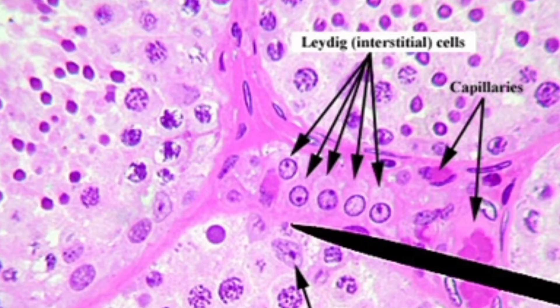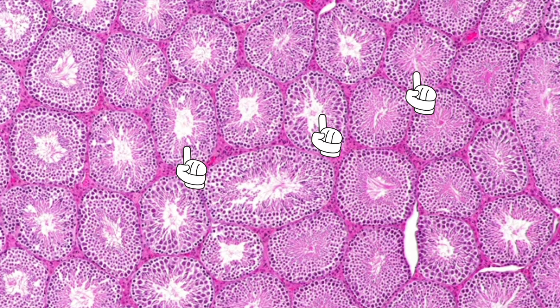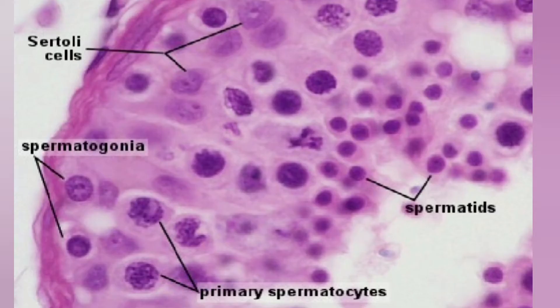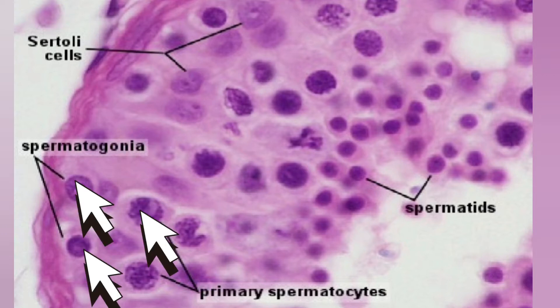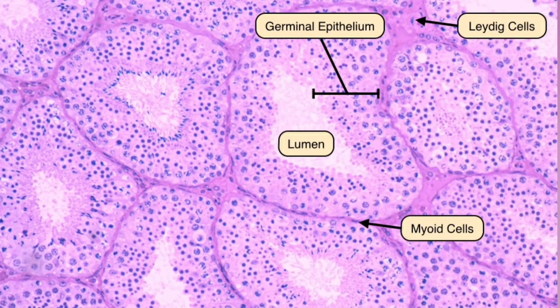The transverse section of the testis shows many seminiferous tubules embedded in the interstitial tissues. These appear as coiled circular structures. Each seminiferous tubule is lined on the inside by germinal epithelium, which divides mitotically to produce male germ cells called spermatogonia. Various stages of development of sperm from the spermatogonia are seen from the periphery to the lumen of the seminiferous tubules.